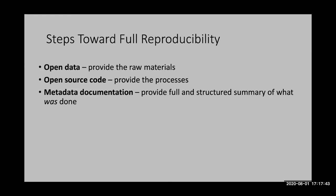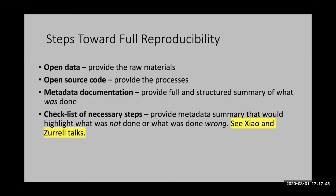A second important step is to provide the source code — providing R code or other programming code where somebody could, at least in theory, walk back through the analyses you've done step by step by reading the code. A third step is metadata documentation: a structured summary of what was done, a step-by-step summary through the whole process of model development. A slightly different form is a checklist, which is more useful because it highlights not just what was done but also what was not done or what was done wrong.